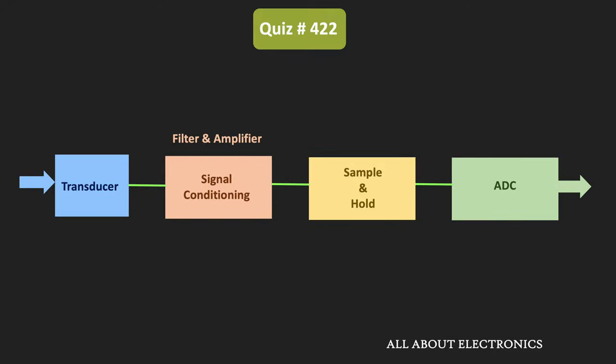As its name suggests, a data acquisition system acquires the input signal and converts it into a digital signal. Typically, the signal being acquired is a real-world signal, and mostly this signal is not in electrical form. So first, with the help of a transducer, the incoming signal is converted into an electrical signal.